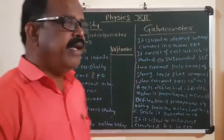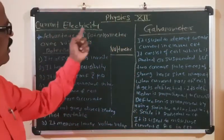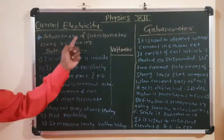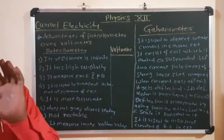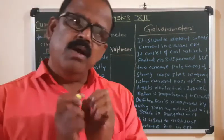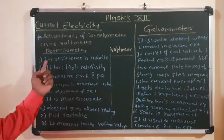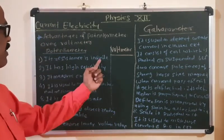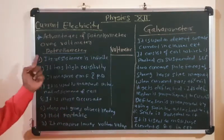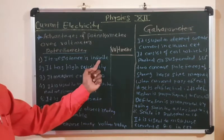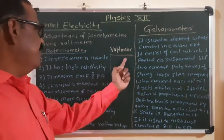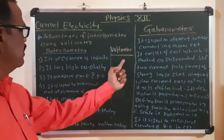Dear students, the next point in current electricity for 12th standard is advantages of potentiometer over the voltmeter. The first advantage is that the resistance of potentiometer is infinite, whereas the resistance of voltmeter is finite.